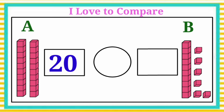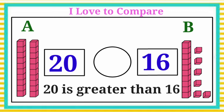Ten, after eleven, twelve, thirteen, fourteen, fifteen, sixteen. Group B has sixteen blocks. Let's write the number sixteen in the box. Let's compare the numbers twenty and sixteen. Twenty is greater than sixteen. Let's draw the greater than symbol here.